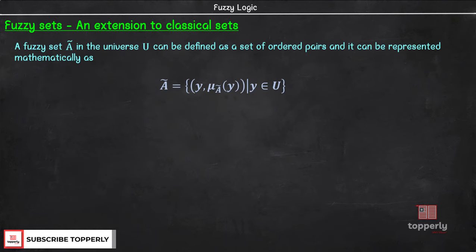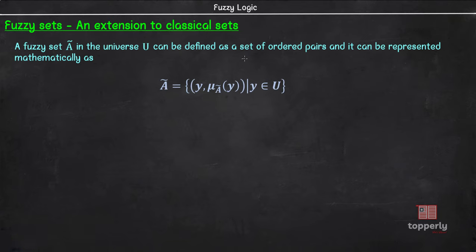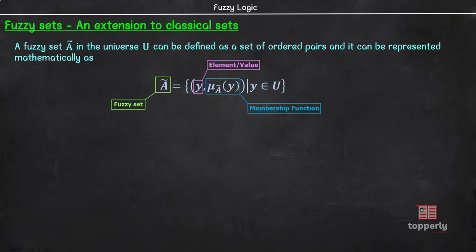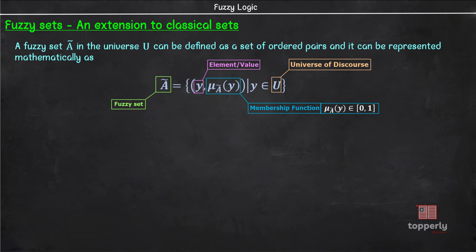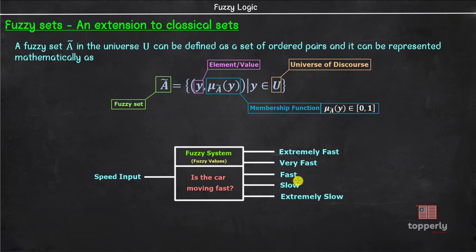Coming to the mathematical definition of Fuzzy sets: a Fuzzy set A in the universe U can be defined as a set of ordered pairs, represented mathematically as Ã = {(y, μ_A(y))}, where y is the element or value, μ_A(y) is the membership function, and U is the universe of discourse. An important point is that the value of μ_A(y) lies in the range of 0 to 1, inclusive. In our earlier example, extremely fast, very fast, fast, slow, and extremely slow are different Fuzzy sets, and we can represent these sets on a Fuzzy graph as a function on a speed scale.